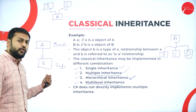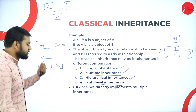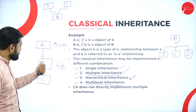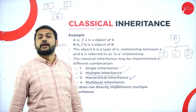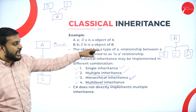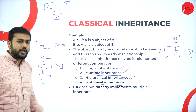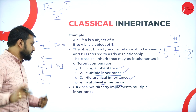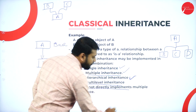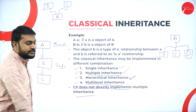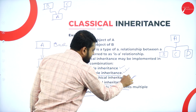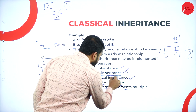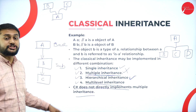The fourth type is multi-level inheritance. Since single inheritance is one level, adding one more subclass below creates multi-level inheritance. An important point: C# does not directly implement multiple inheritance — you cannot implement that concept directly in C#.